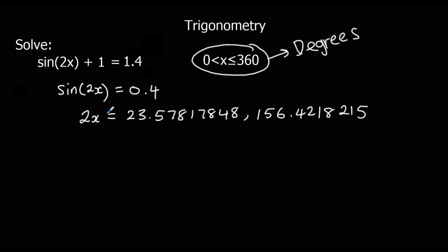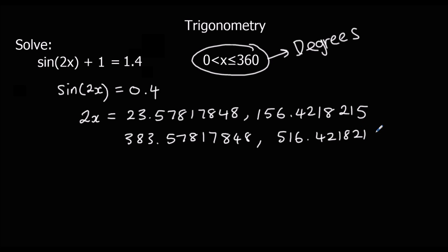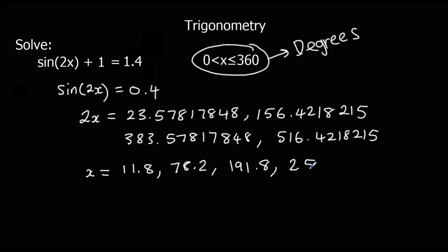Since it's 2x, we need to generate twice as many answers. Add 360 to both: 23.578... + 360 = 383.57817848, and 156.422... + 360 = 516.4218215. Those are our four values for 2x. Halving them all to get x, to one decimal place: 11.8, 78.2, 191.8, and 258.2 degrees.